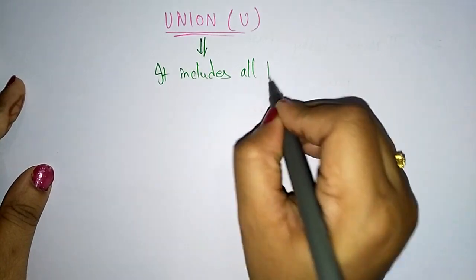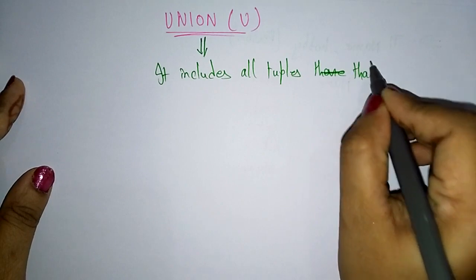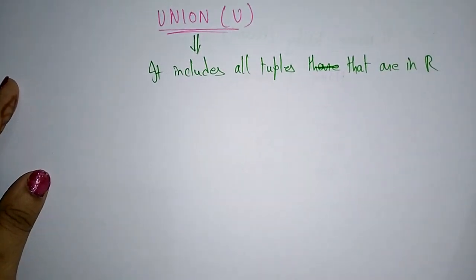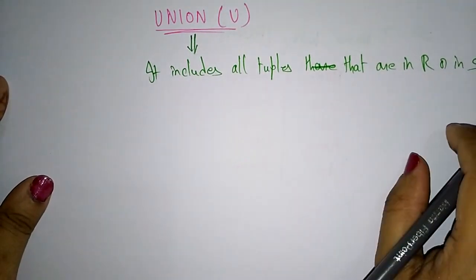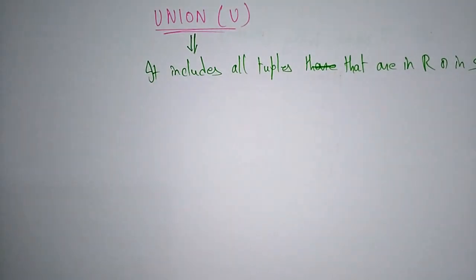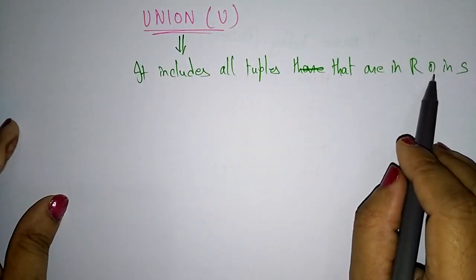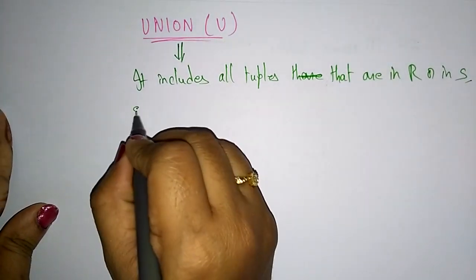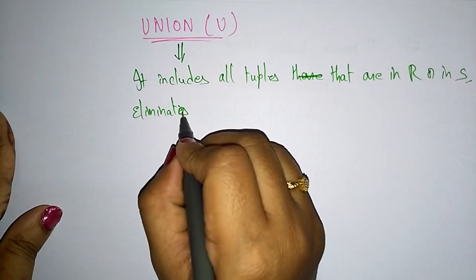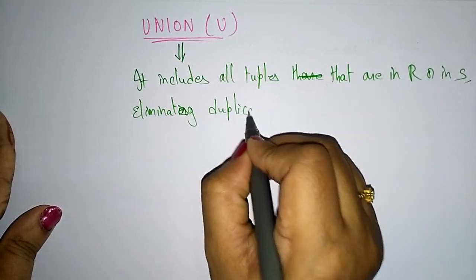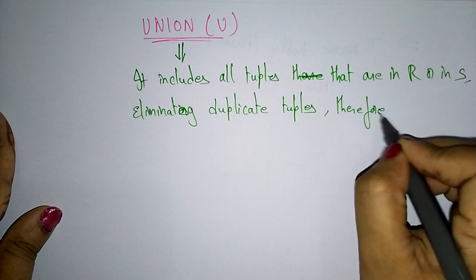Union includes all tuples — meaning all rows — that are in relation R or in relation S. We are taking two tables, R and S, because we have to combine the rows from two or more tables. It includes all tuples that are in R or in S, and eliminates duplicate tuples.